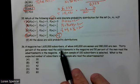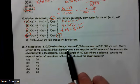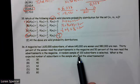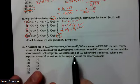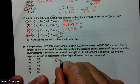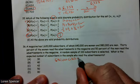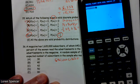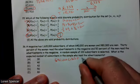So a magazine has 1,620 subscribers of whom 640,000 are women and 980,000 are men. 30% of the women read the advertisements in the magazines and 50% of the men read the advertisements. A random sample of 100 subscribers is selected. What's the expected number in the sample who read the advertisement? We have 640,000 times 30% of the women, so times 0.30. So 192,000 women read the advertisements.